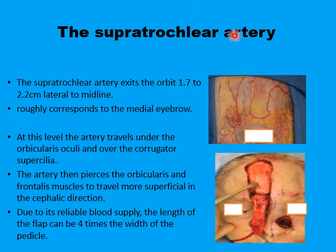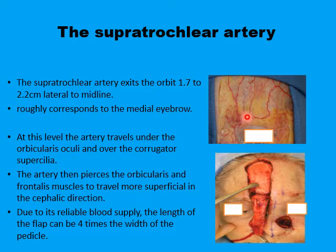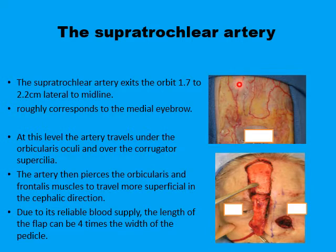The paramedian forehead flap receives most of its blood supply from the supratrochlear artery, with some contribution from branches of the supraorbital artery. The supratrochlear artery has a fairly consistent course: it exits the orbit at a point roughly corresponding to the medial end of the eyebrow, somewhere between 17 and 22 millimeters from the midline. About one centimeter above the eyebrow, the main stem of the artery can be located and confirmed by Doppler. Its course then runs vertically up the forehead until the hairline, initially deep to the frontalis muscle and superficial to the corrugator, before piercing the frontalis to lie in a subcutaneous plane into the scalp.